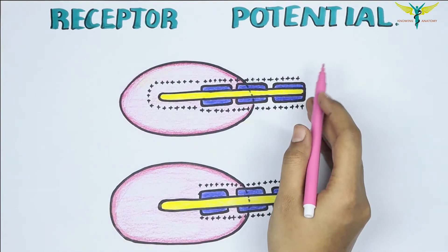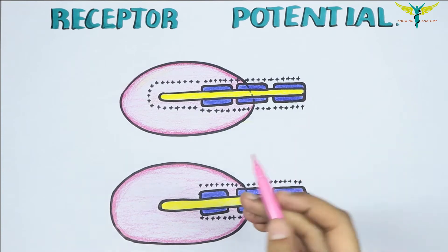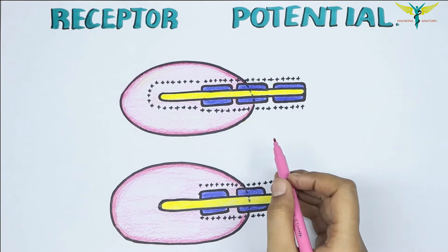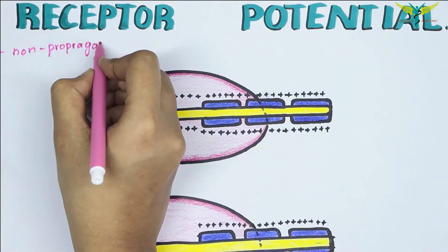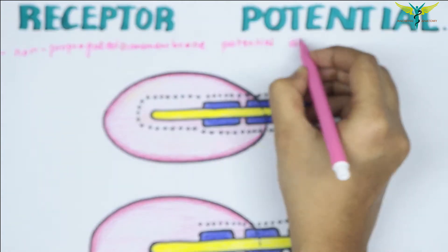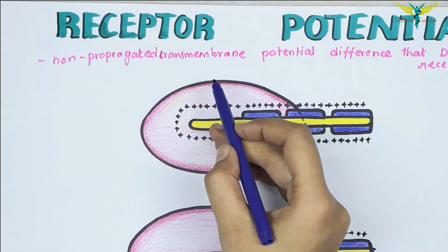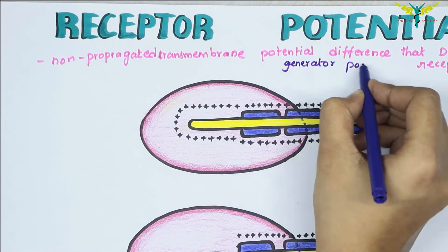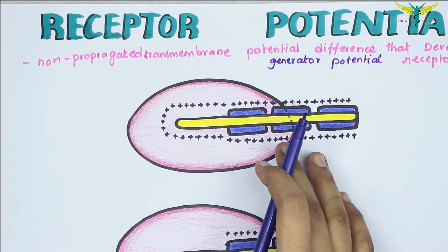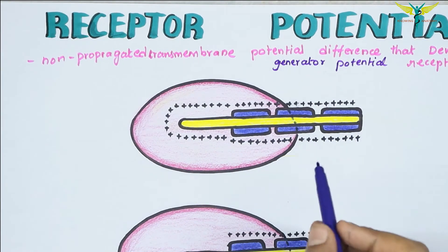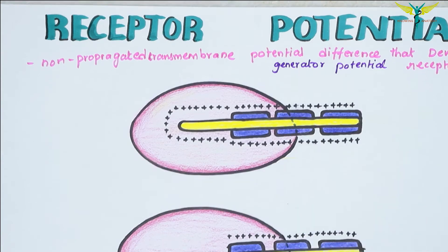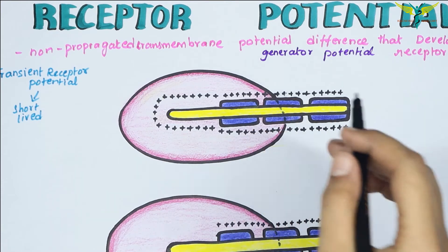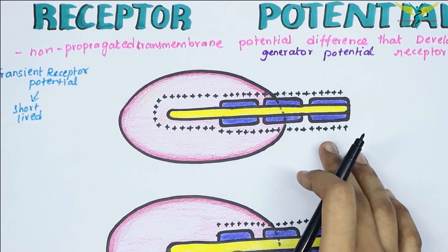The receptor potential is a non-propagated transmembrane potential difference that develops when a receptor is stimulated. It is also called the generator potential. The receptor potential is short-lived, hence it is called a transient receptor potential. It is not an action potential — it is a graded potential.